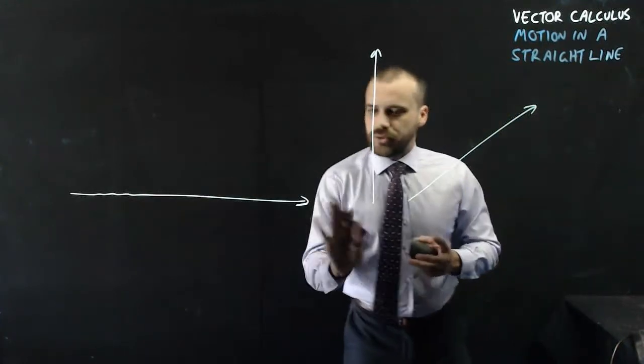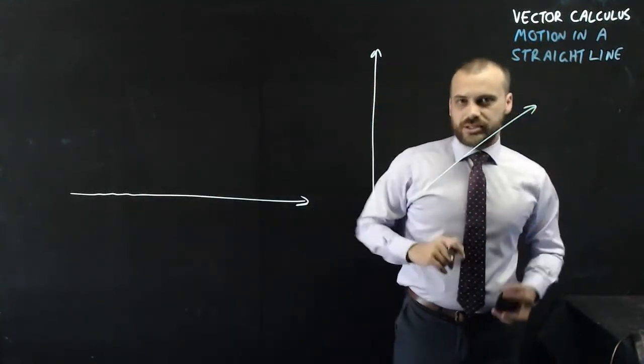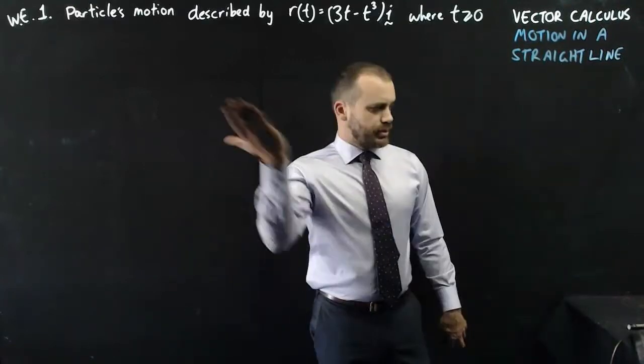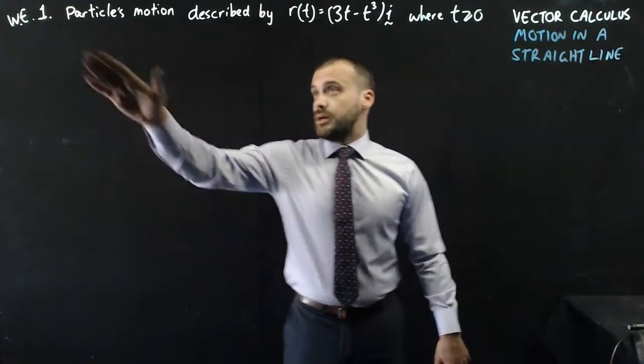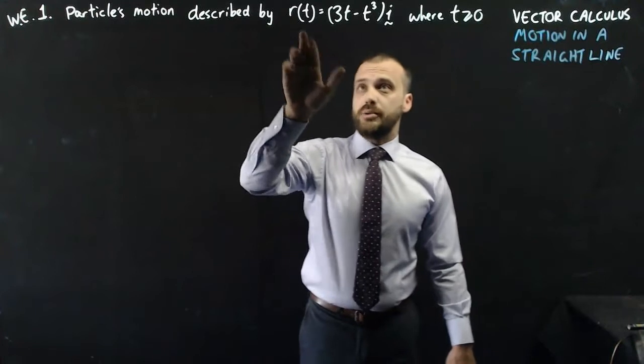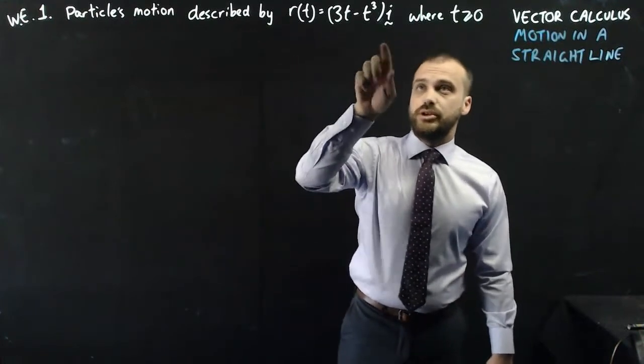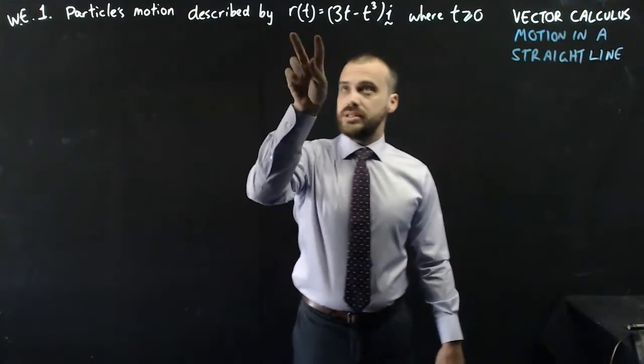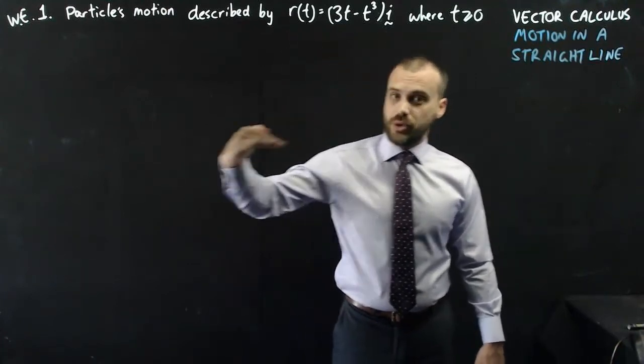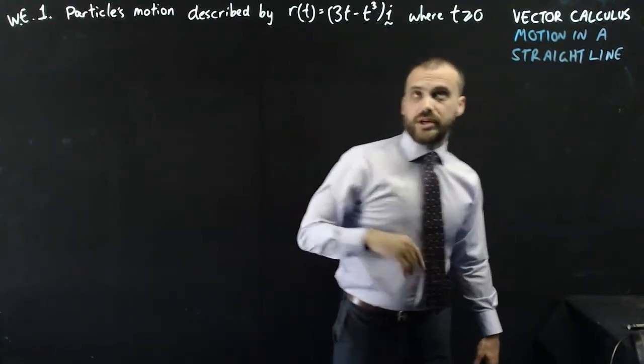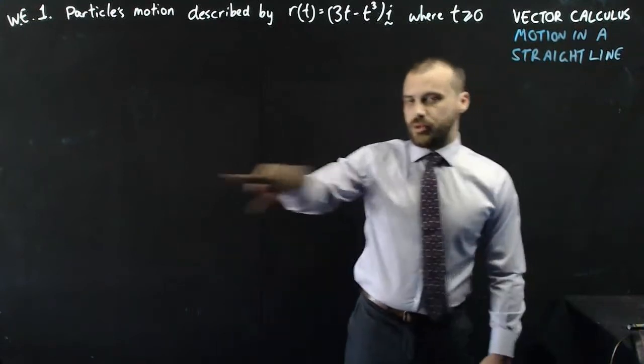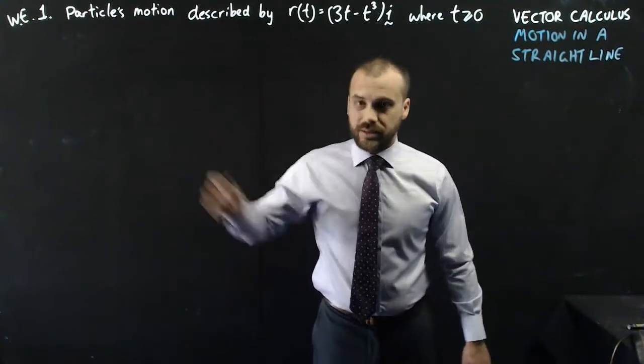Let's do a couple of work examples. Here's the setup, no question yet. Particle's motion described by r(t) = (3t - t³)i. So this is its displacement vector, and you can see it's only moving in the i component. It's only moving straight across. Might be moving that way, might be moving back that way, might go that way and turn around, something like that.